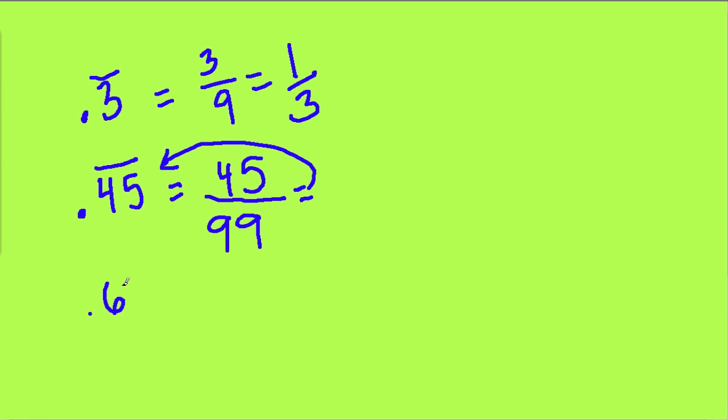Another example: 0.671 repeating. This would be 671 over - well, there are three numbers, so three 9s: 999. So all repeating decimals can be turned into fractions in this way.